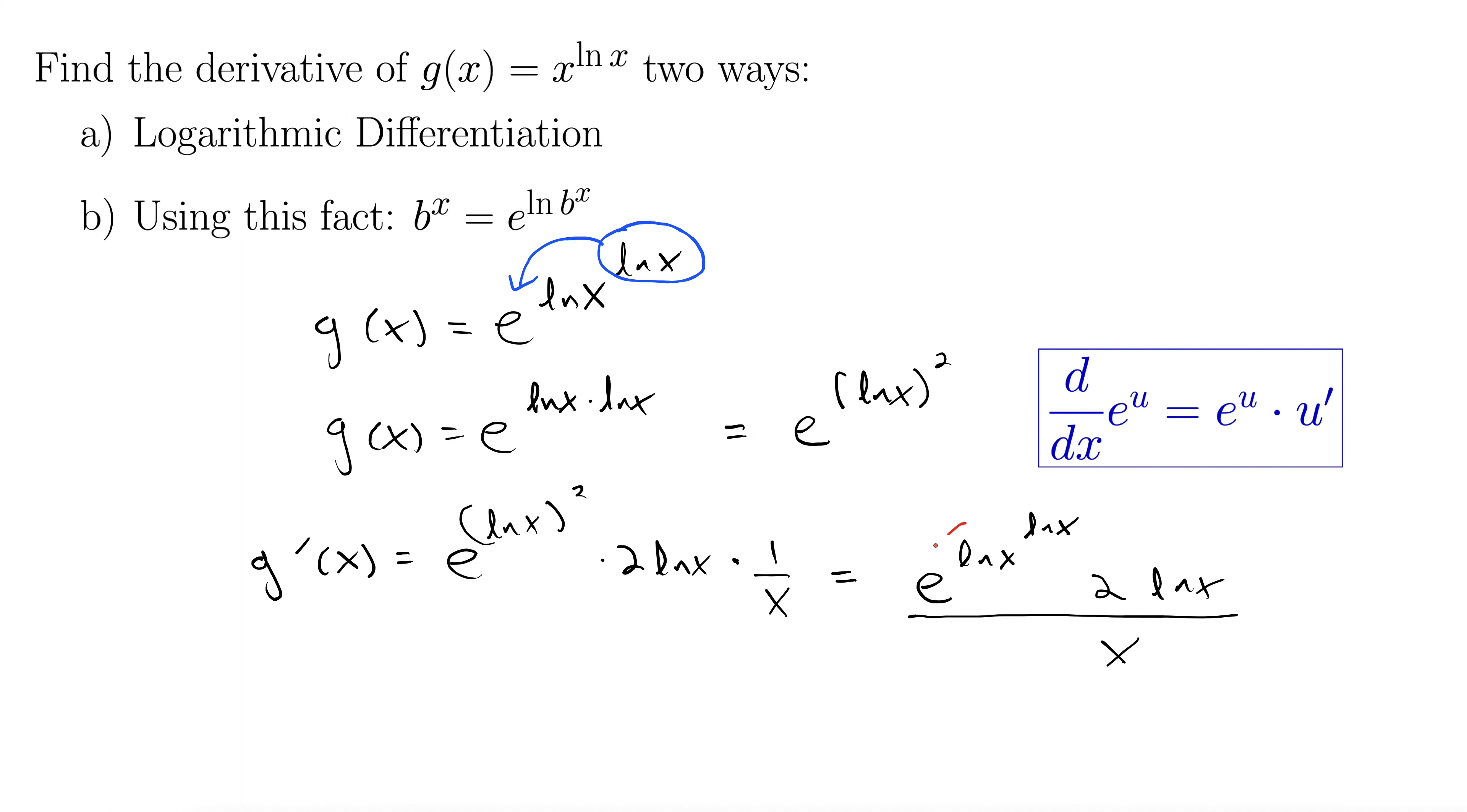Well the e and the natural log are inverses so they undo each other, which finally we can rewrite this as 2 x to the natural log x minus 1 times natural log x. That ought to do it.